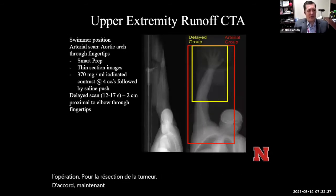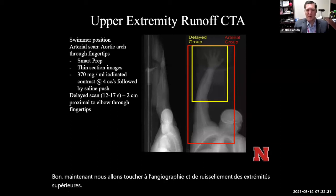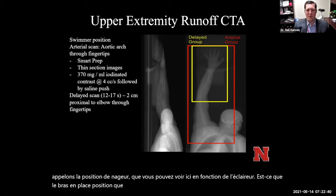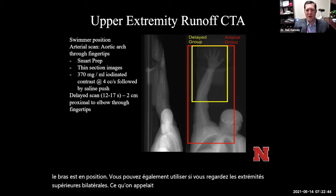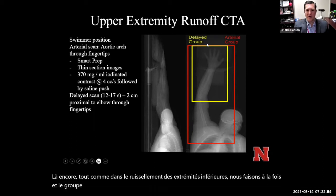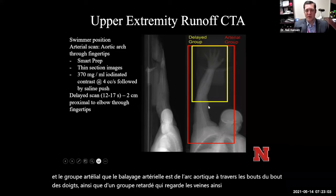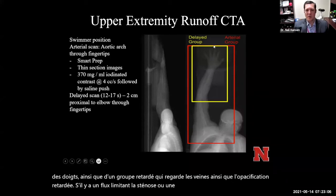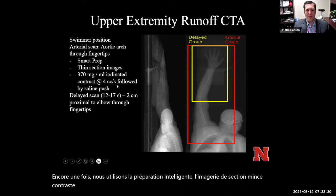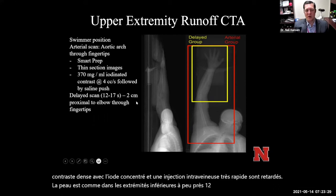Now touching on upper extremity runoff CT angiography. We usually put the person in the swimmer position — the arm up position — as seen on the scout. For bilateral upper extremities, we use the Superman position with both arms above the head. Just like in lower extremity runoff, we do both an arterial scan from the aortic arch through the fingertips, as well as a delayed scan looking at the veins and delayed opacification if there's a flow-limiting stenosis upstream of the hand. The delayed scan covers from just above the elbow through the fingertips. We use smart prep, thin section imaging, dense contrast with concentrated iodine, and a rapid intravenous injection. The delayed scan is about 12 to 17 seconds after the arterial phase scan.